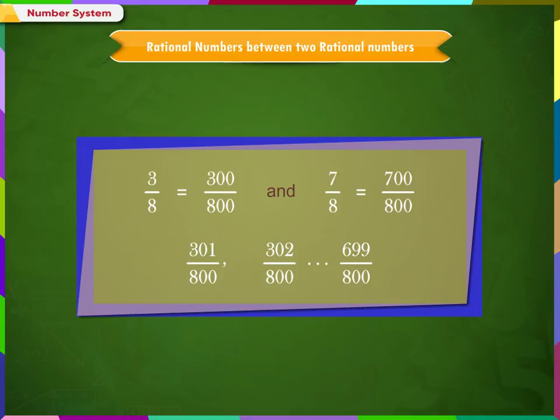Therefore, we can observe that unlike natural numbers and integers, there are infinite numbers of rational numbers between any two given rational numbers.